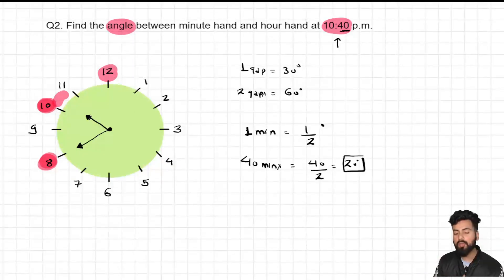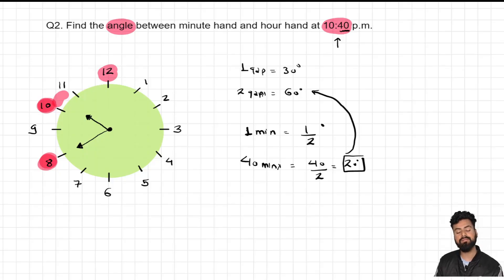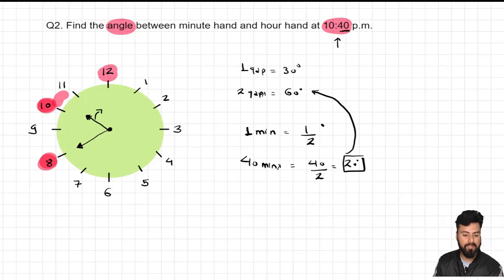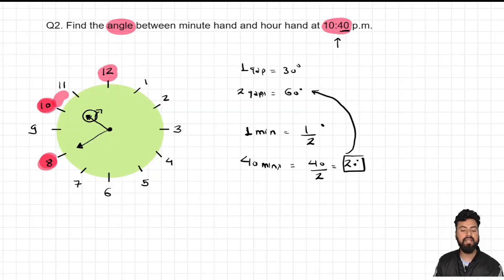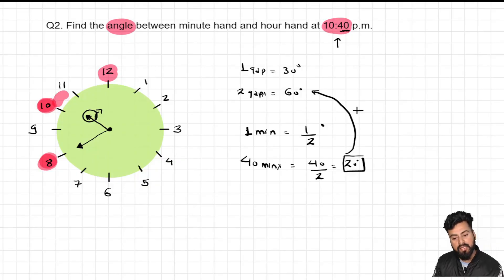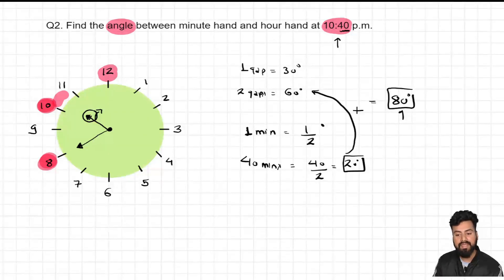Now the important question is whether to add or subtract 20 degrees. Looking at the hour hand — this time the hour hand is moving away from the minute hand. Therefore the value of the angle will increase, so we add. The final answer is 60 plus 20, which is 80 degrees.